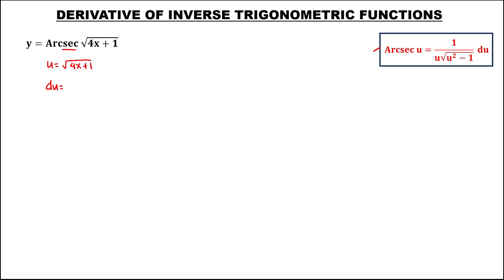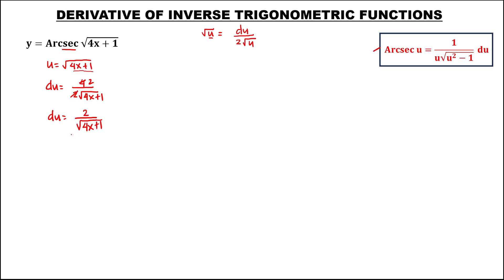Then du, or the derivative of u — since the derivative of the square root of u equals the derivative of the function inside the radical over 2 times the given — for square root of 4x plus 1, the derivative of 4x plus 1 is 4, over 2 times square root of 4x plus 1. Simplifying: 4 divided by 2 is 2, so du equals 2 over the square root of 4x plus 1.